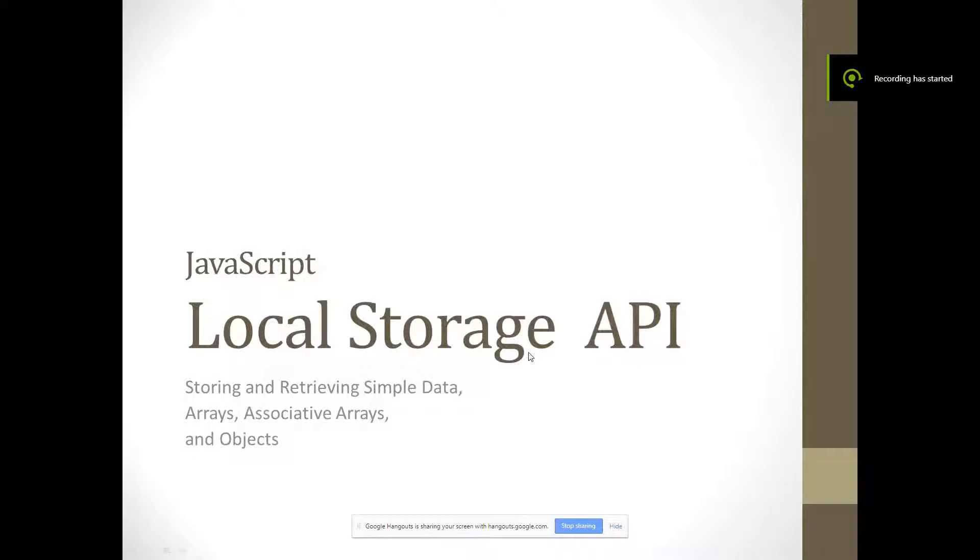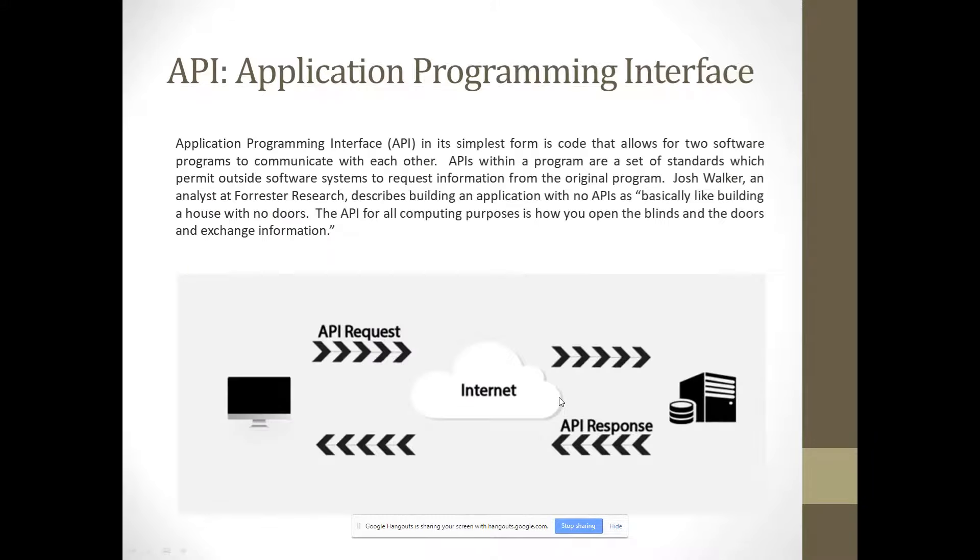So, my section was on local storage APIs and about modifications to the DOM. I'll go into both of those. First of all, an API, which is an application programming interface, which means that it's a way for, I'll just read what it says, application programming interface in its simplest form is code that allows for two software programs to communicate with each other.